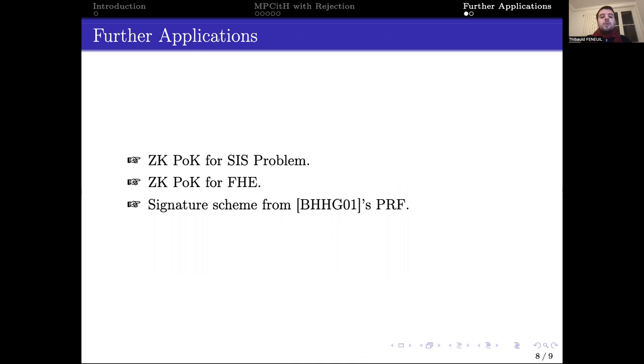In our work, we apply our sharing techniques to other applications. First, it can be applied to the short integer solution problem, for which it provides an efficient alternative when the underlying ring is not small and NTT-friendly. Secondly, it can be applied to build efficient zero-knowledge arguments of key knowledge in the context of fully homomorphic encryption. Finally, it can be used to build an efficient signature scheme from Boneh and Halevi's PRF.